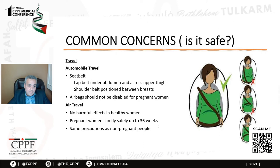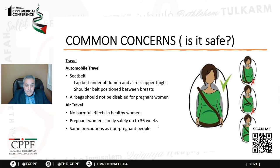Traveling during pregnancy — car travel is usually safe, and being pregnant is not a reason to avoid using a seat belt. There is a proper way to position the seat belt: the lap belt under the abdomen and across the upper thigh, and the shoulder belt positioned between the breasts. Airbags should not be disabled during pregnancy. Air travel is also safe and not harmful until 36 weeks of gestation, but we should take the same precautions as non-pregnant people — drink plenty of fluid, move around, and exercise legs, especially on long trips.